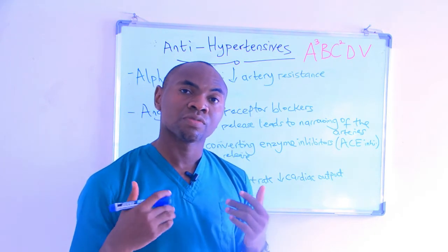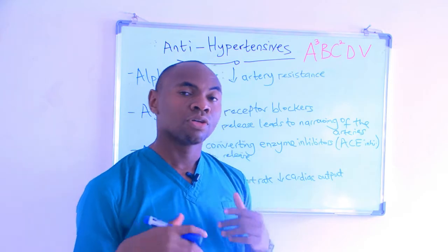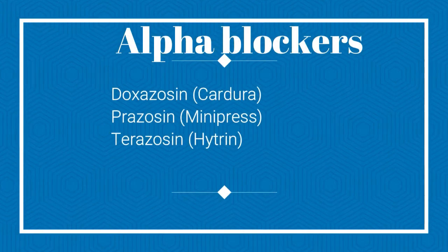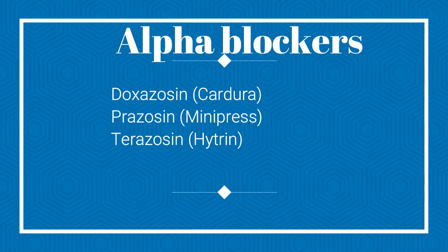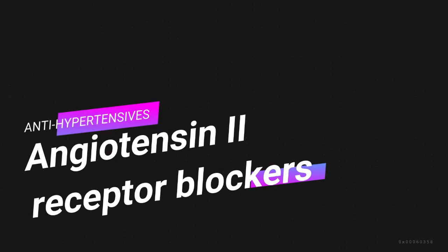Examples of alpha blockers include doxazosin, also called Cardura; prazosin, also called Minipress; and terazosin, also called Hytrin.